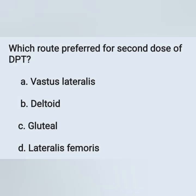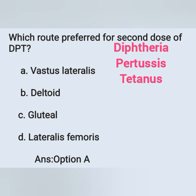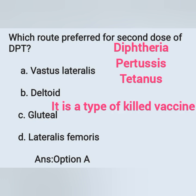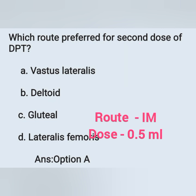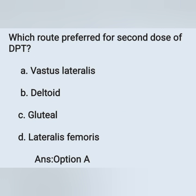Which route is preferred for the second dose of DPT? Option A: vastus lateralis. Option B: deltoid. Option C: gluteal. Option D: lateralis femoris. DPT is diphtheria, pertussis and tetanus. The correct answer is vastus lateralis — option A. This DPT vaccine is a type of killed vaccine, given IM with a dose of 0.5 ml, in the anterior lateral aspect of the mid thigh in infants. For children and adults, it is given in the upper and outer quadrant of the gluteal muscles.